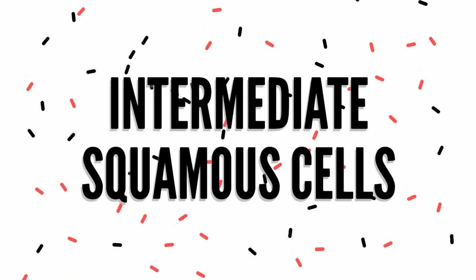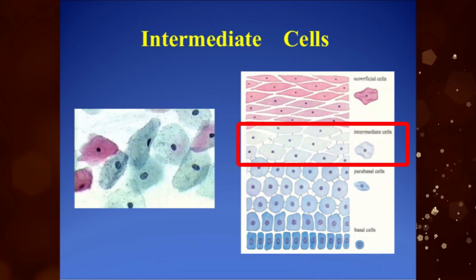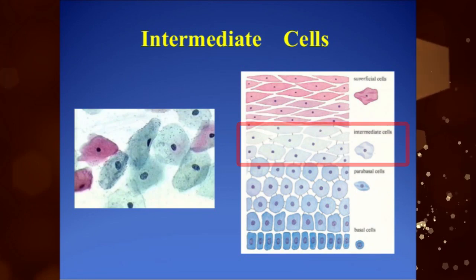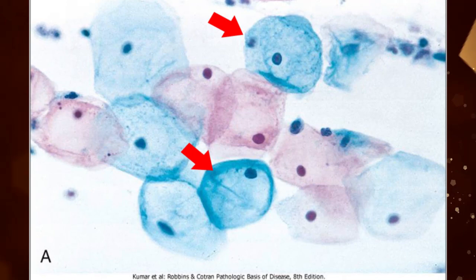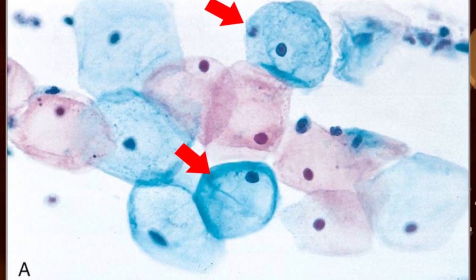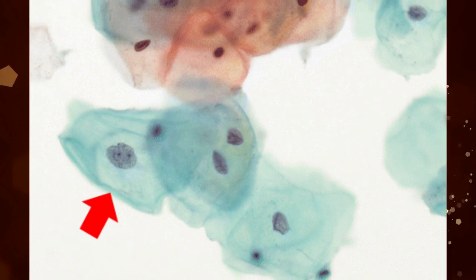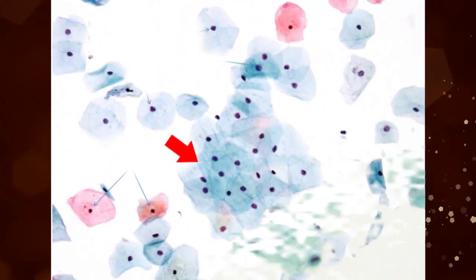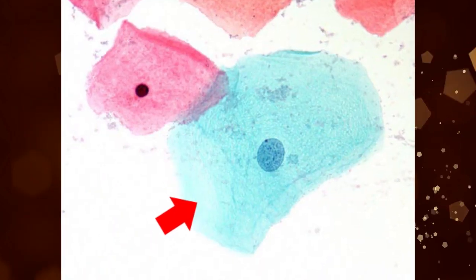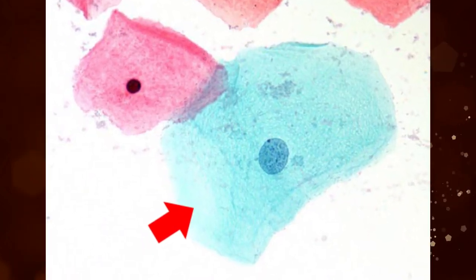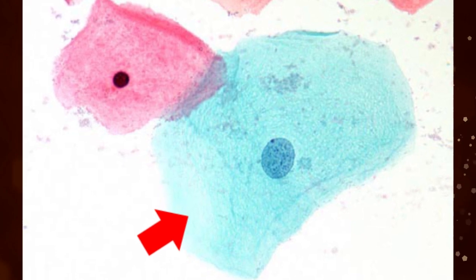Intermediate Squamous Cells are found in the stratum spongiosum layer of the squamous epithelium. These cells are large polygonal shaped, 30 to 60 micrometers in diameter. Intermediate cells occur singly or in sheets. Nuclei are centrally placed and get a round or oval shape. Also, fine granular chromatin can be seen.